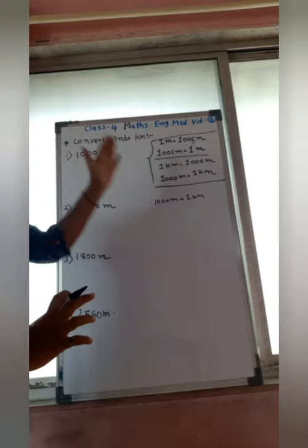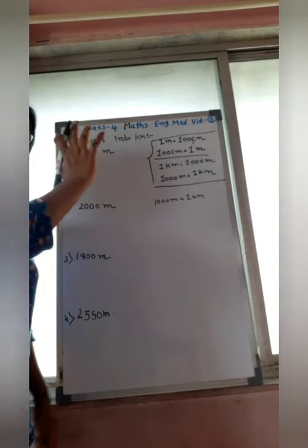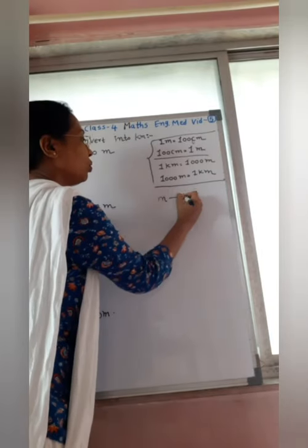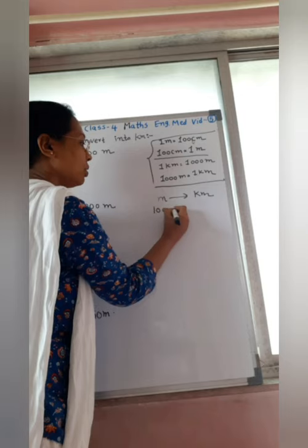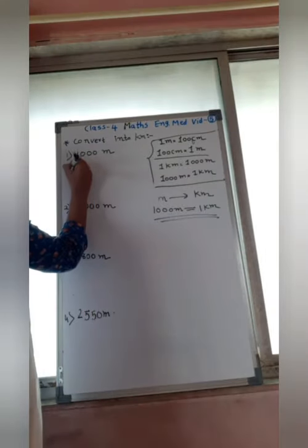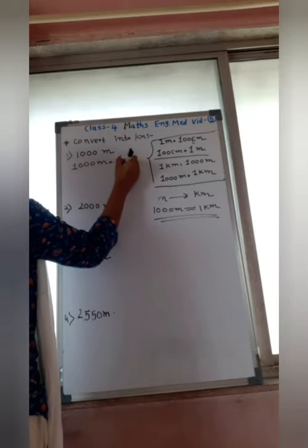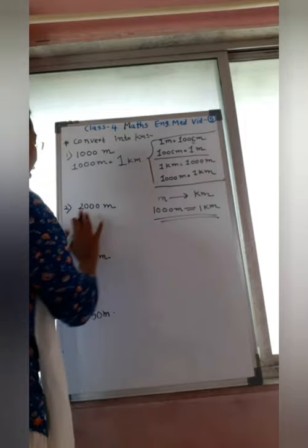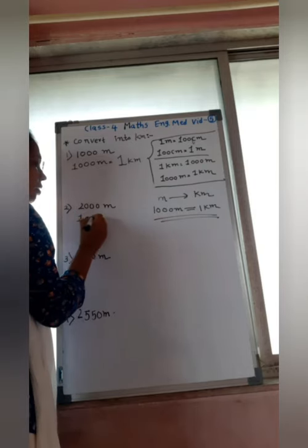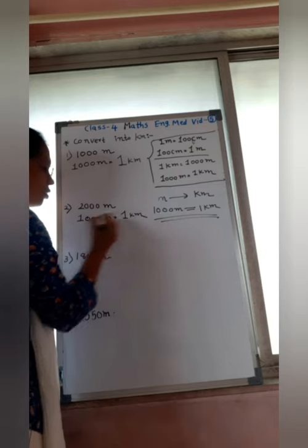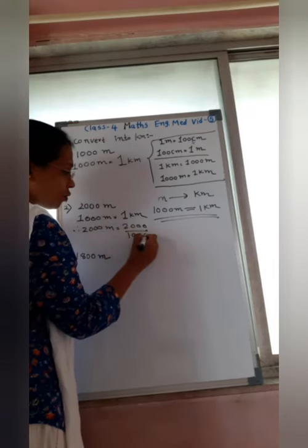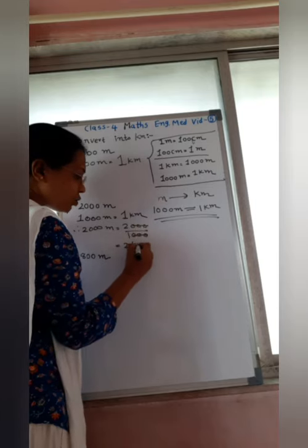Now convert into kilometer — meter is given. To convert meter into kilometer, use the formula: 1,000 meter equals 1 kilometer. First: 1,000 meter equals 1 kilometer — that is straightforward. Second: 2,000 meter. So, 2,000 meter equals 2,000 divided by 1,000 — the last 3 zeros cancel — answer is 2 kilometer.